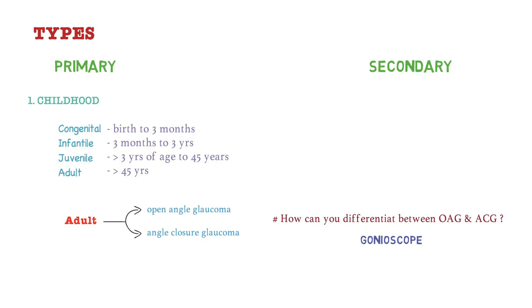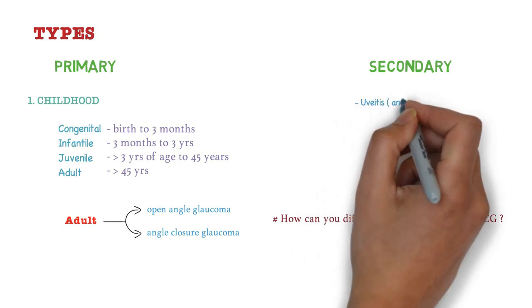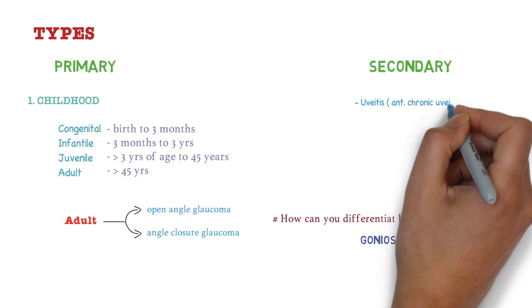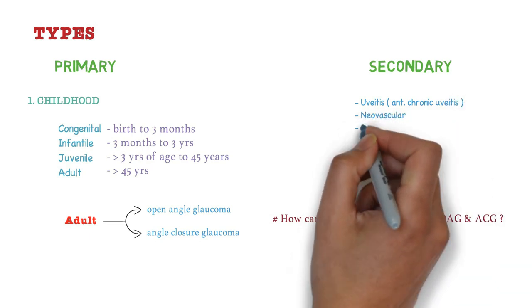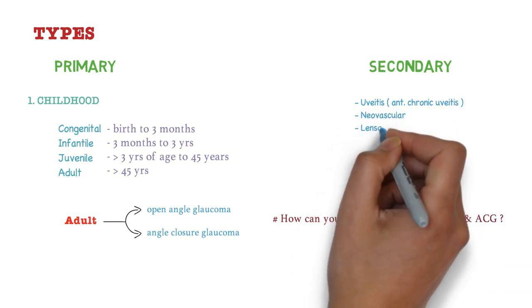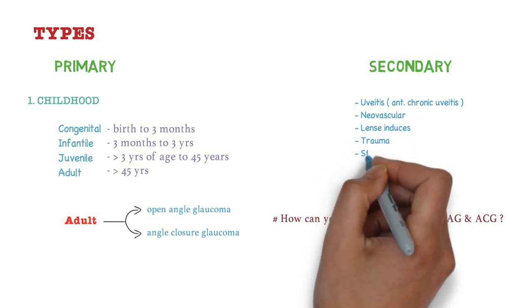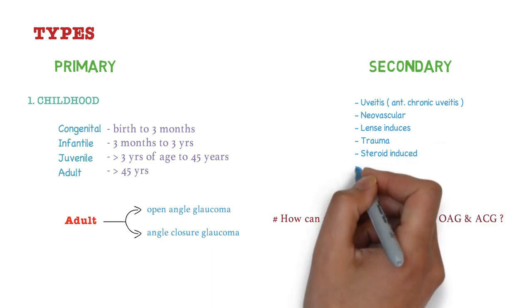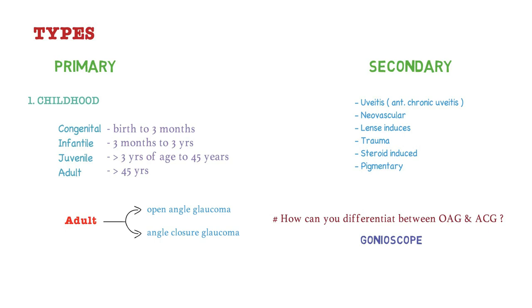In the secondary type, glaucoma is generally due to predisposing factors such as uveitis — most commonly anterior chronic uveitis — neurovascular diseases, lens-induced causes, trauma, steroids, or pigmentary causes.